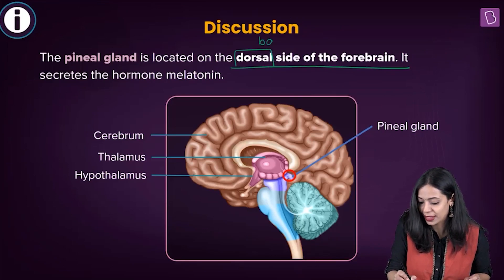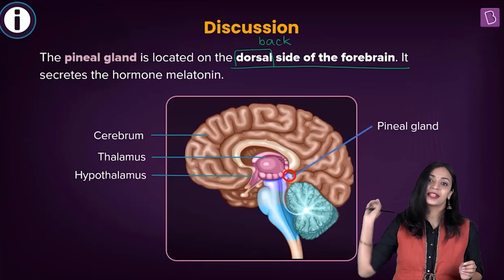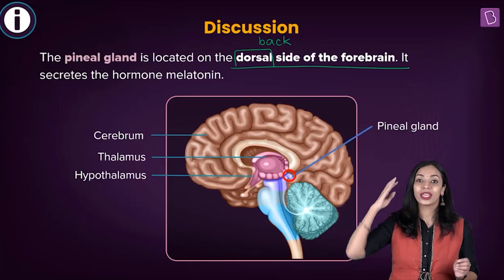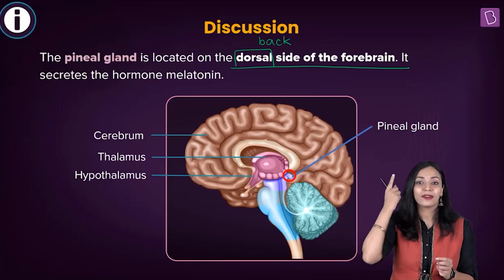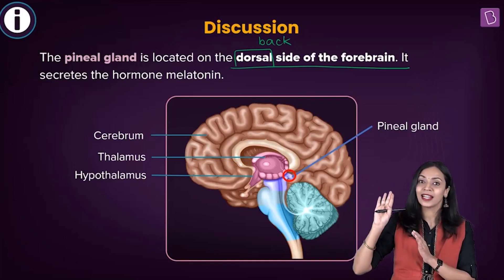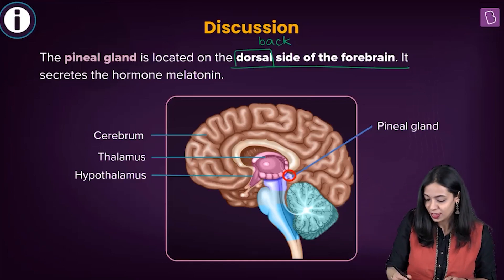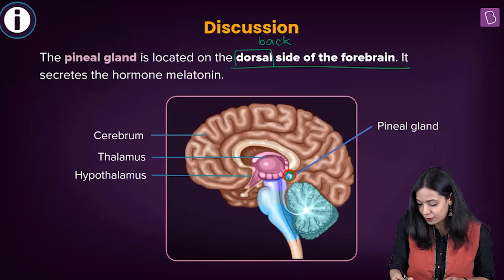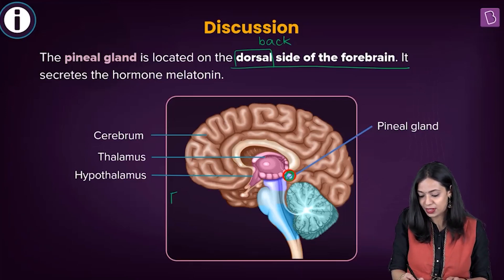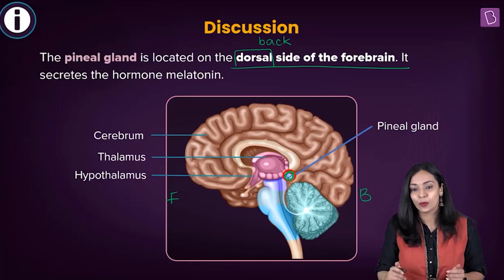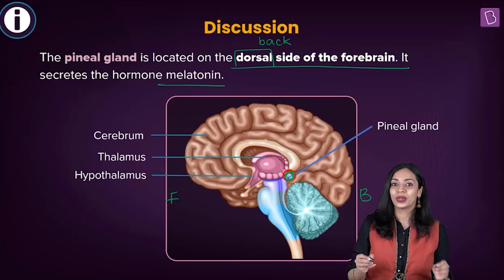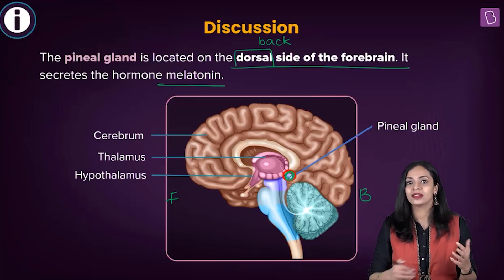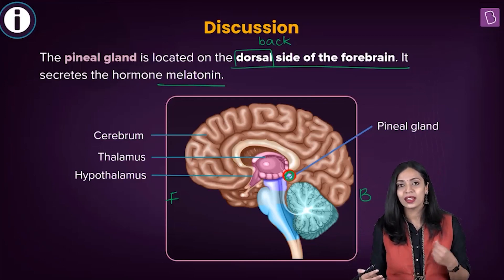Dorsal here refers to the back side. When you're looking at the forebrain, this pineal gland can be found on the dorsal side — slightly towards the back side. The pineal gland is involved in the secretion of melatonin, which regulates the diurnal rhythm and the sleep-wake cycle in our body.